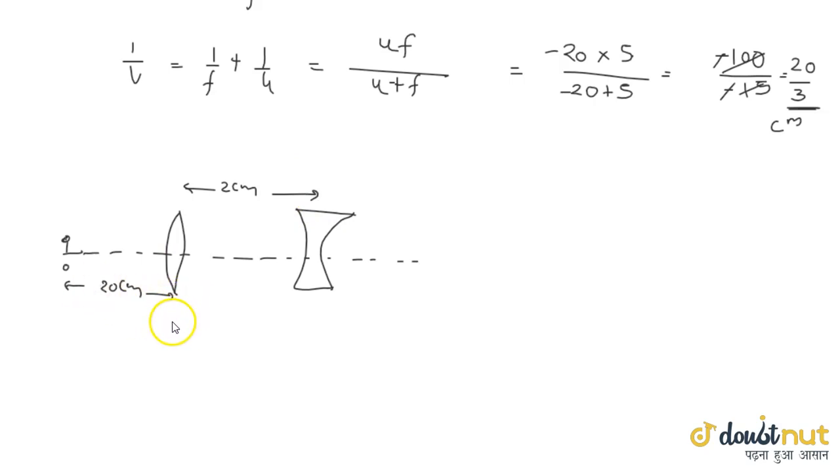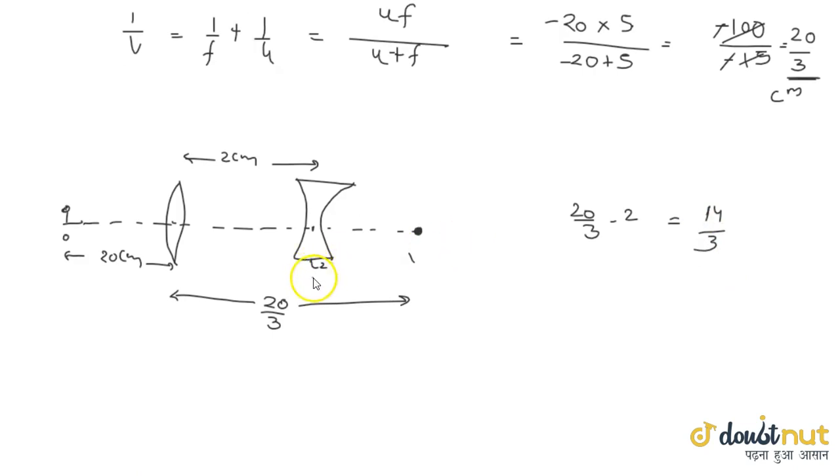The distance was 20 cm and the distance between lenses was 2 cm, and the image was 20 by 3, almost 6.66 cm away from L1.